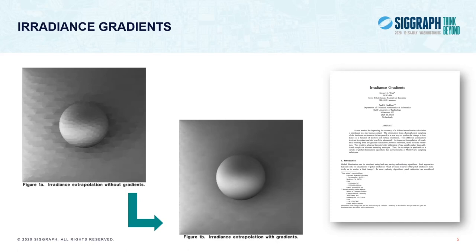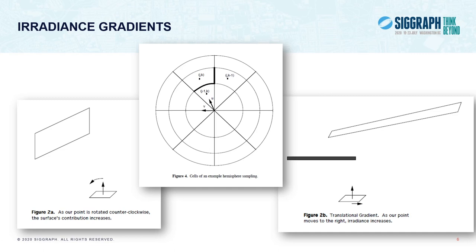The irradiance gradients proposed by Ward and Heckbert in 1992 tried to address that issue by introducing gradients — a directional variation of the irradiance inside a record — providing much smoother results. These gradients are based on the way we sample the hemisphere. In the original paper, constant-weighted stratified sampling is used. The idea is to look at the walls of a given stratum and compute how the walls would move if we rotated the normal slightly or translated the point slightly.